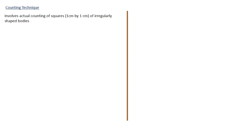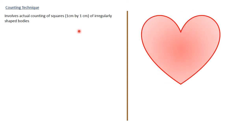In the counting technique, this involves the counting of squares which are normally one by one centimeter of regular shaped bodies. I'm going to use the shape on your screen — the shape of a heart — and we want to estimate the area of this. Remember, this is approximation, so this is what we do.